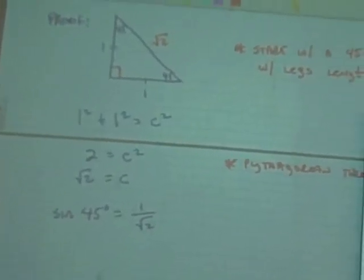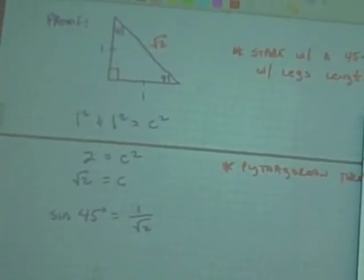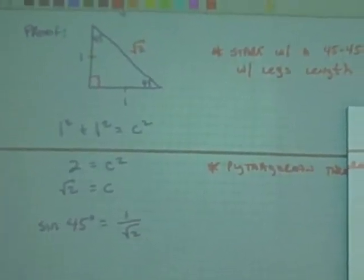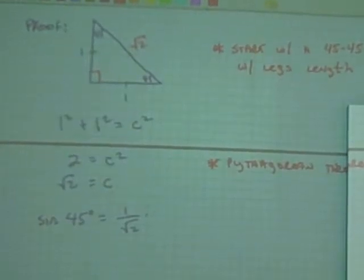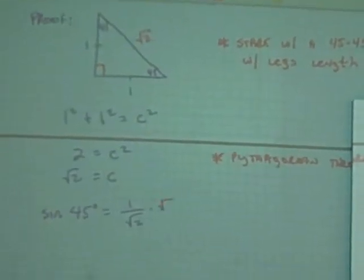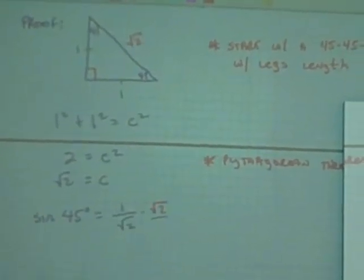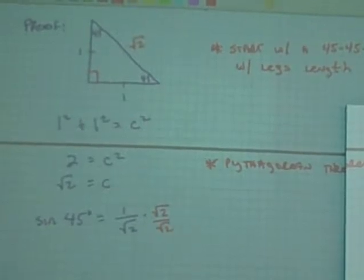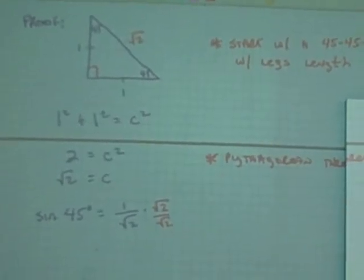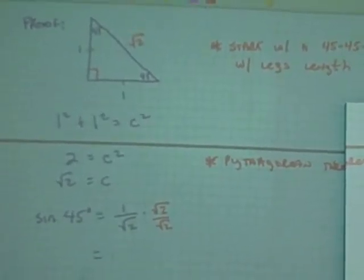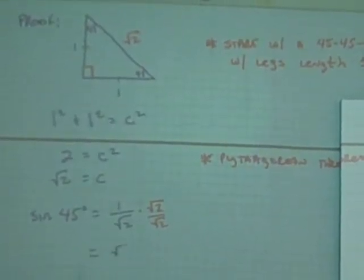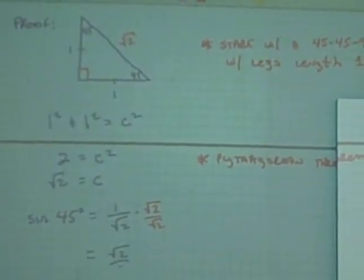Does that look like what we want to prove? What do we have to do? Rationalize the denominator. How do we do that? Multiply by square root of 2 over square root of 2. What does that give us? Square root of 2 over 2.